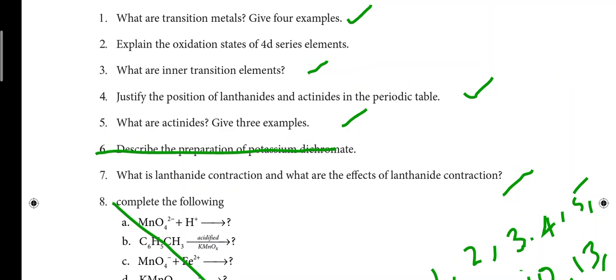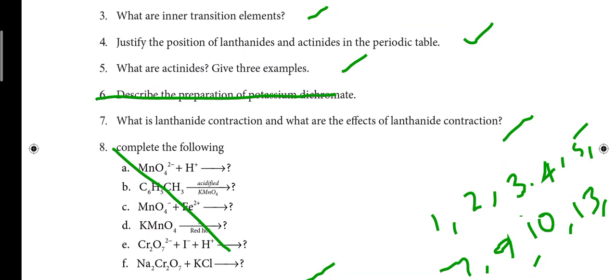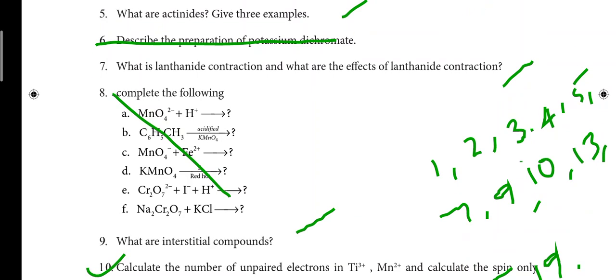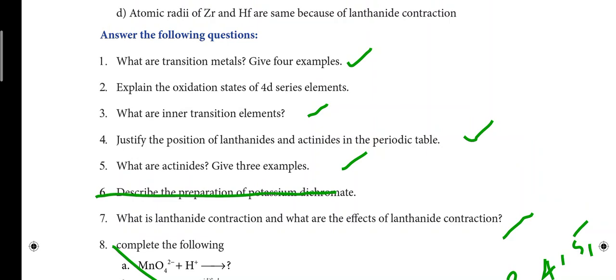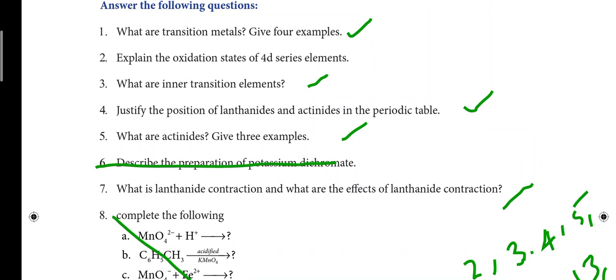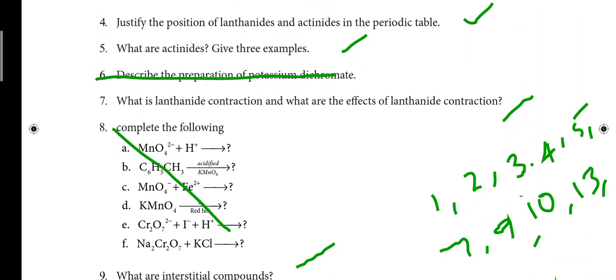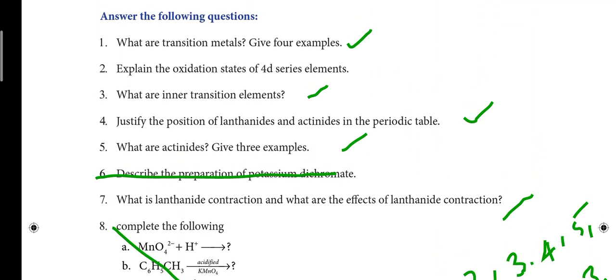So in the 4th lesson book pack, we can skip 2 questions. The first question is: what are transition metals, give 4 examples — that question is important. Questions on D block elements and transition metals are essentially the same. The third question is: what are inner transition elements, which are F block elements.